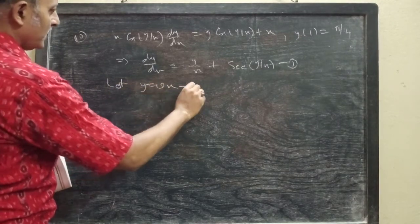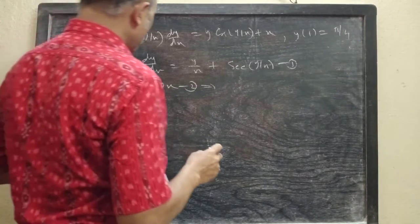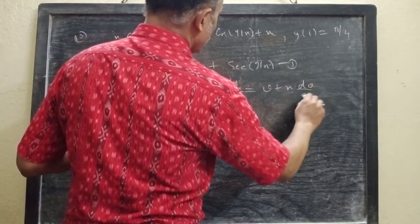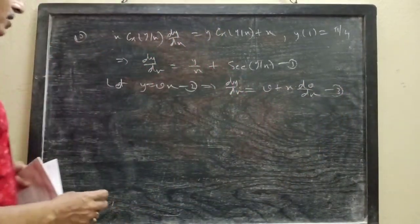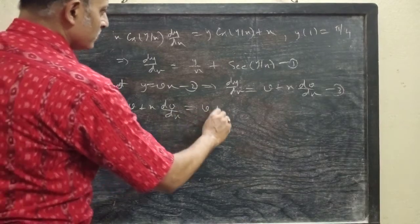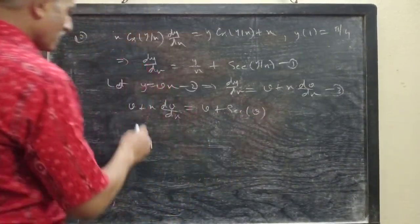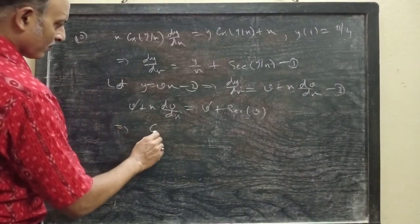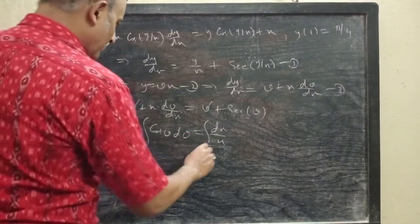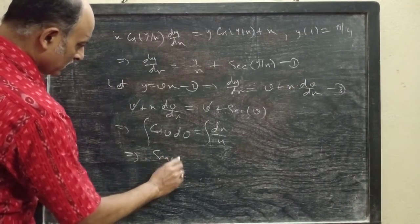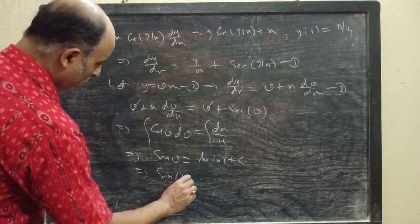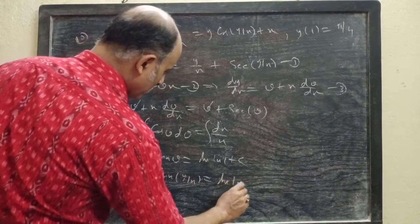Let y equal v·x — this is equation 2. Differentiating both sides of equation 2 with respect to x we get dy/dx equals v plus x·(dv/dx). This is equation 3. From equations 1, 2, and 3 we substitute and simplify, arriving at an expression involving sin(y/x) plus c.